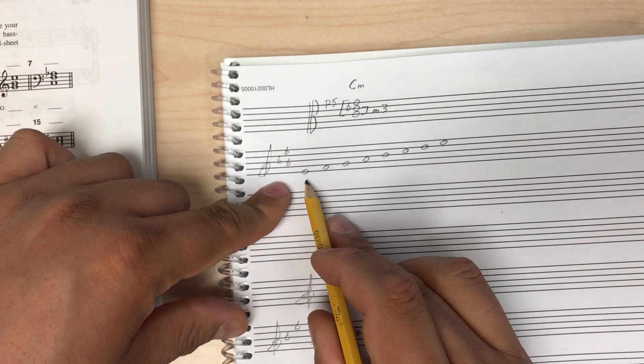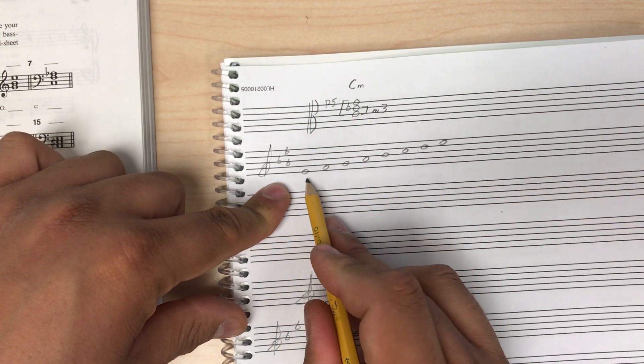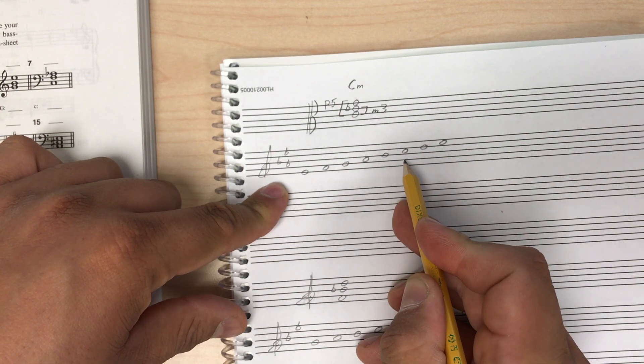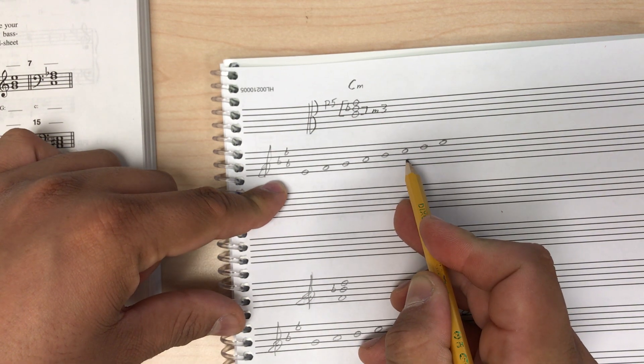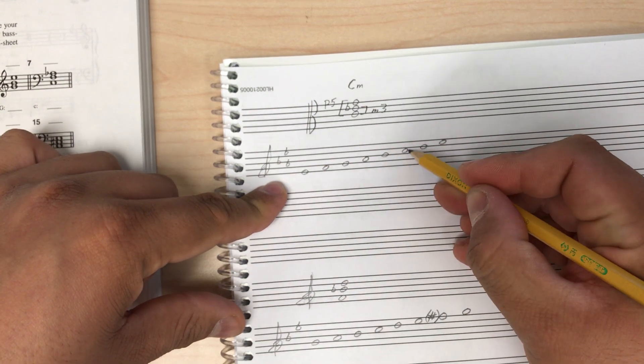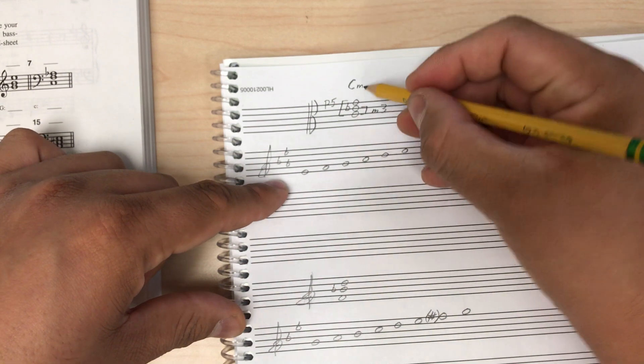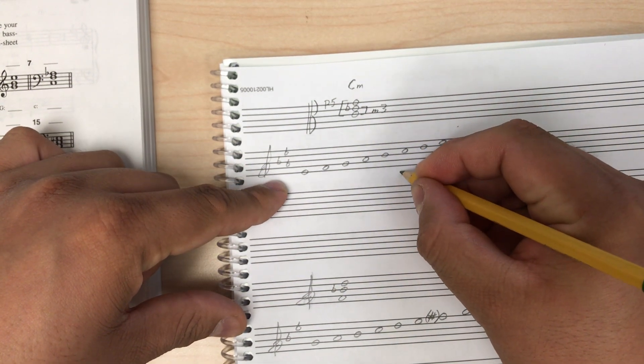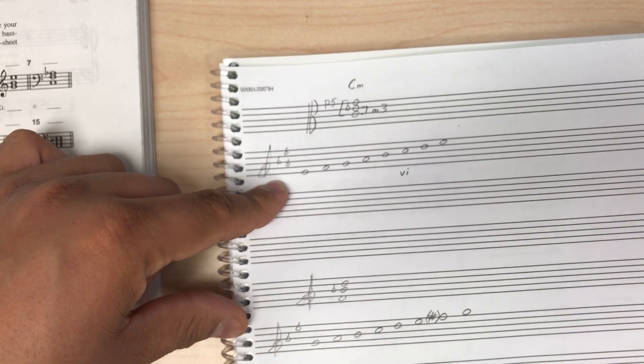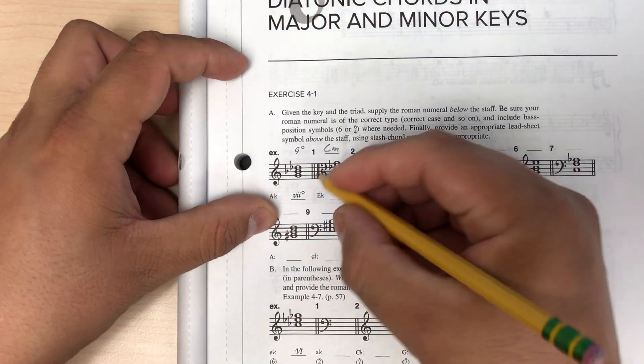So we want to place the C minor chord in the context of E flat major. We want to know, where is C in the E flat major scale? Well, C is the 1, 2, 3, 4, 5, 6th scale degree. C is the submediant. So that means the C minor chord, any chord built off of the C in the key of E flat major will be a 6 chord. And since this is a minor chord, we want to use a lowercase Roman numeral. So lowercase Roman numeral 6, VI. So that is our Roman numeral.